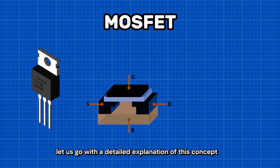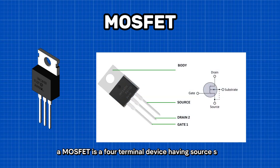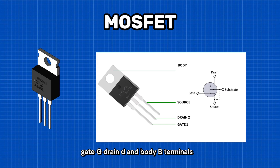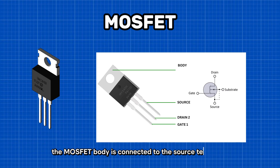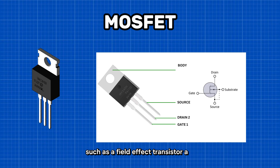So, what is a MOSFET? A MOSFET is a four-terminal device having source (S), gate (G), drain (D), and body (B) terminals. In general, the MOSFET body is connected to the source terminal, forming a three-terminal device such as a field-effect transistor.